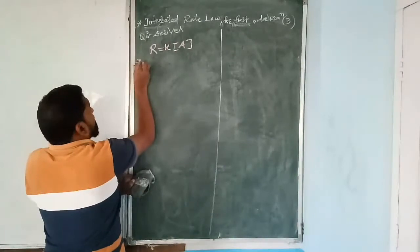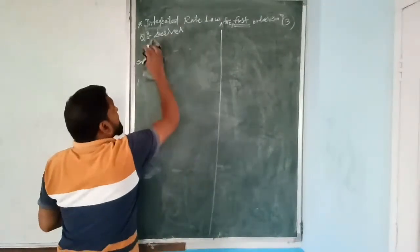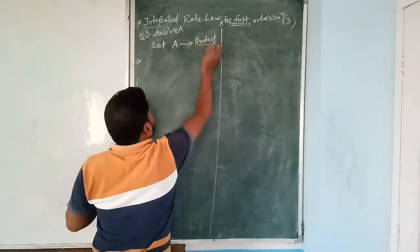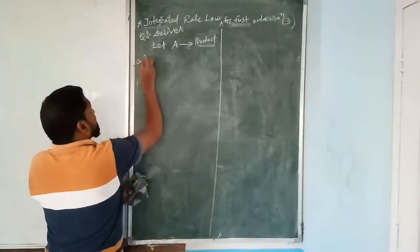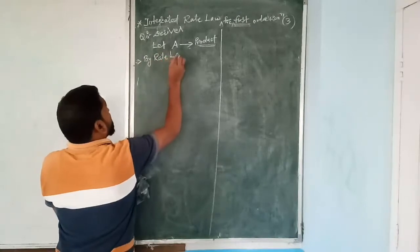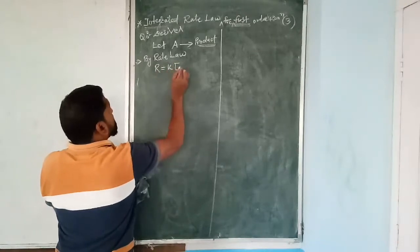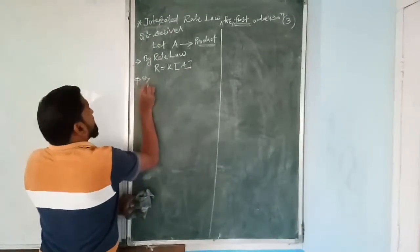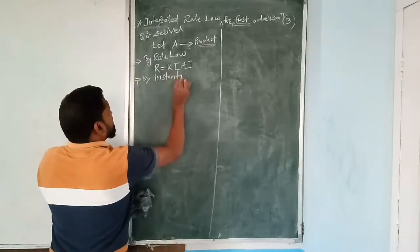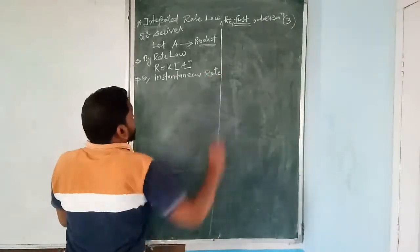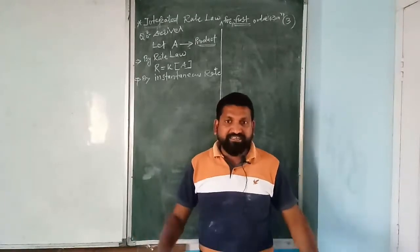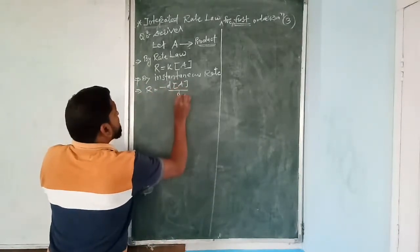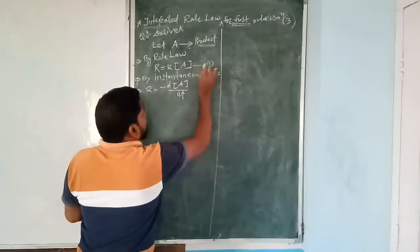By instantaneous rate, R = -d[A]/dt. Equation 1 is R = k[A] and equation 2 is R = -d[A]/dt. Both have the same left-hand side R. Therefore we can combine them, giving k[A] = -d[A]/dt. Rearranging: d[A]/[A] = -k dt.